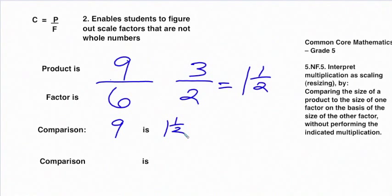If we were to do another example, let's say we reverse it, and we're comparing 6 to 9. So then if we do some simplification, this will simplify to 2 over 3, so the comparison here is that 6 is 2 thirds of 9.